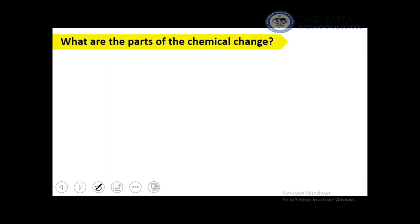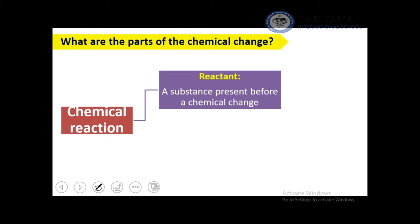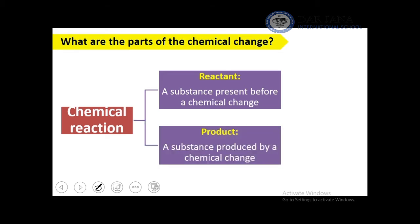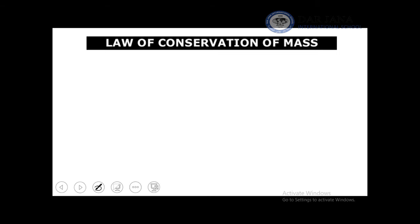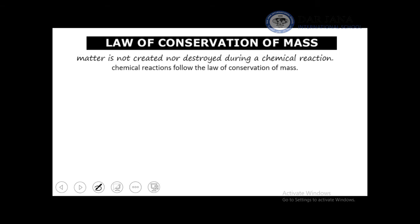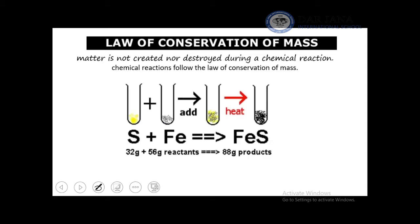In any chemical reaction we have reactants on one side and products on the other — together they form a chemical equation. The Law of Conservation of Mass states that the amount of mass on the reactant side must equal that on the product side — matter is neither created nor destroyed during a chemical reaction.